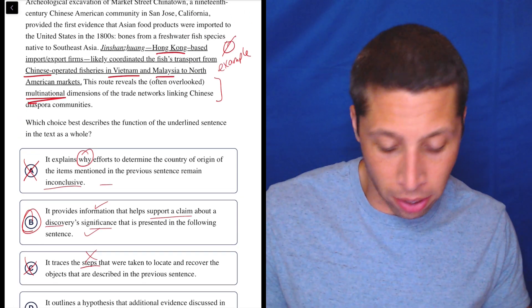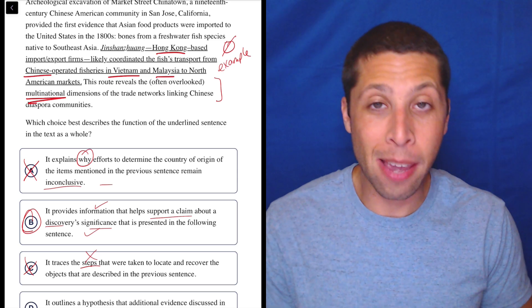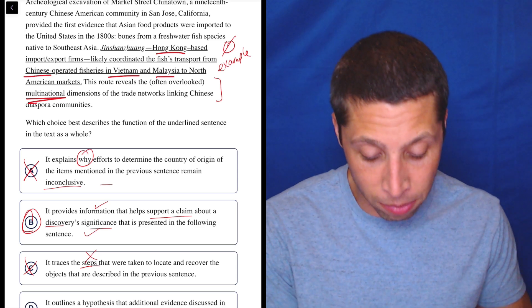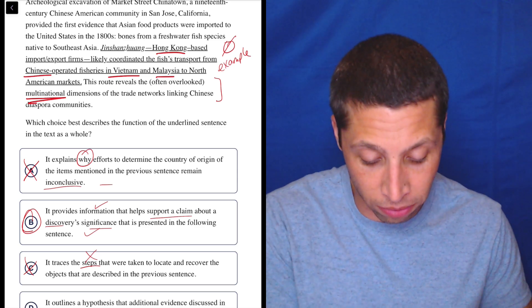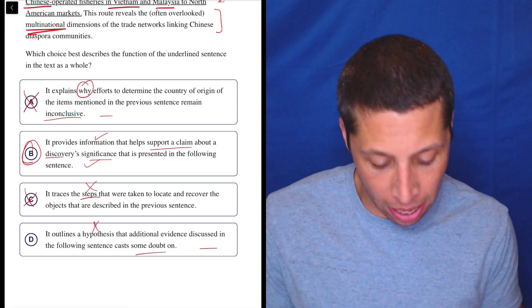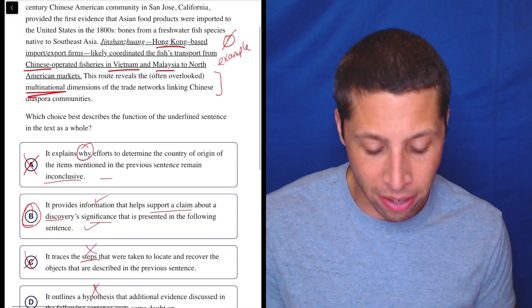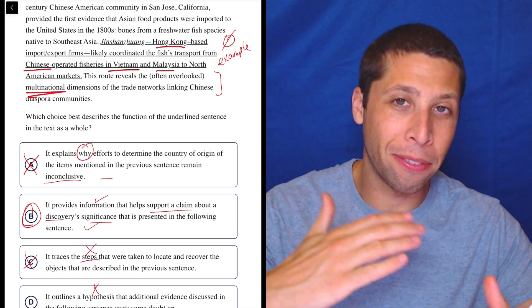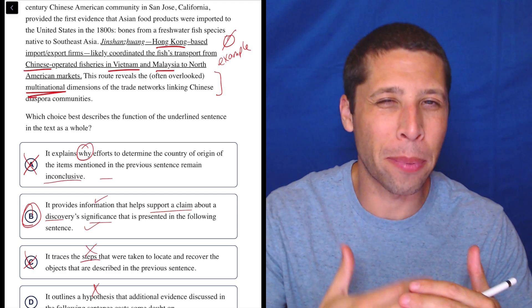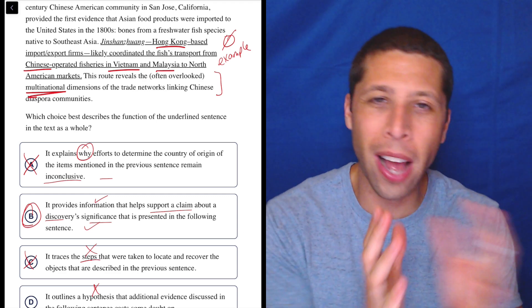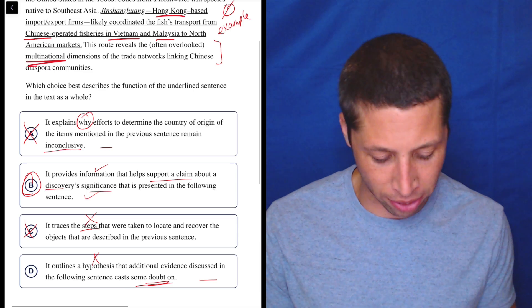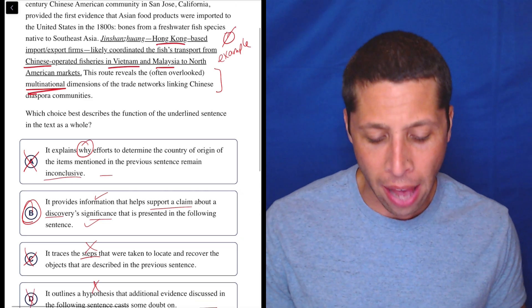They're not like we wonder if maybe these things came through these firms. It just seems like that's just true. It's just a fact. So it's not a hypothesis. And again, there's nothing being – this is an example that then the next sentence follows from that example. And they relate to each other. They're not opposites. There's no contrast here. So casting doubt doesn't make sense.